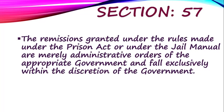So Section 57 is for administrative purposes only. Section 55 says that if the appropriate government wants, life imprisonment can be reduced to 14 years. But Section 57 says life imprisonment will be treated as 20 years — but this is only for administrative purposes. Clearly, there is no confusion between the two sections.